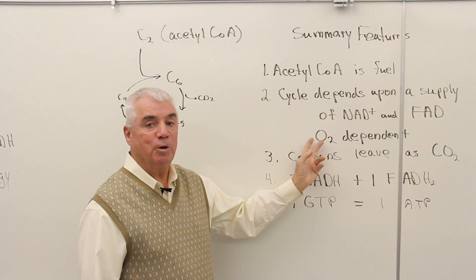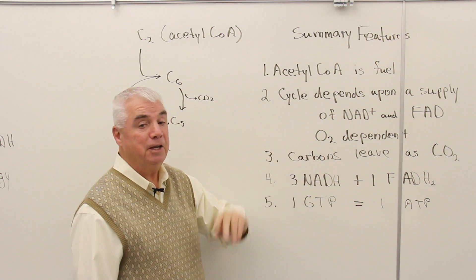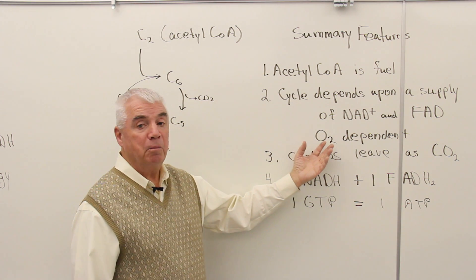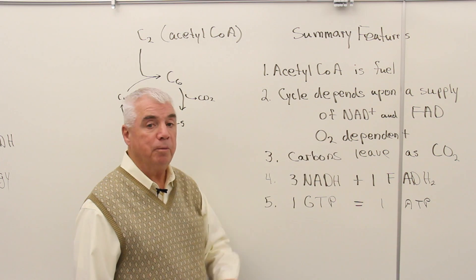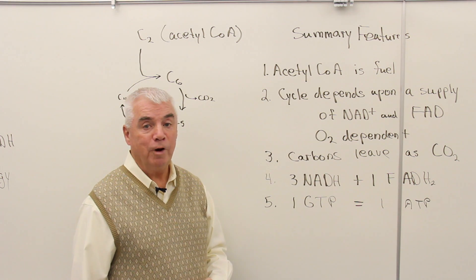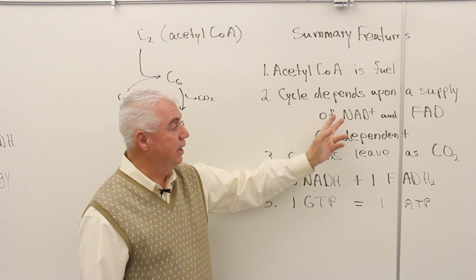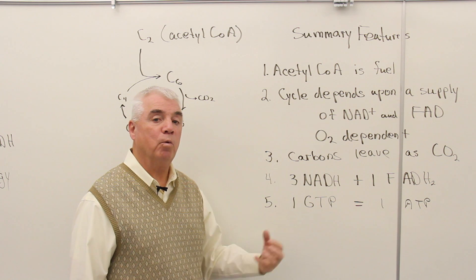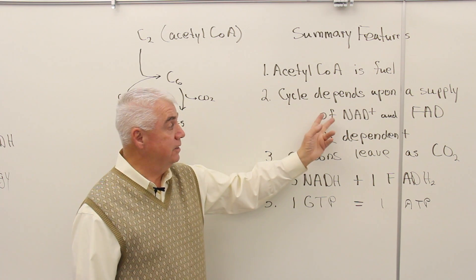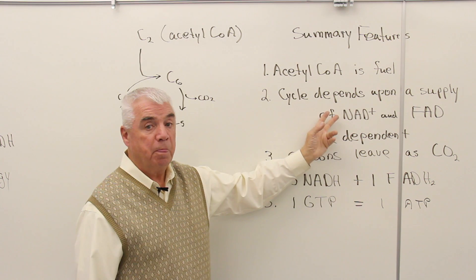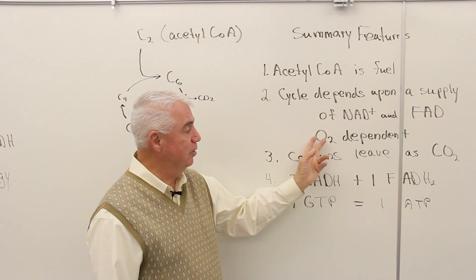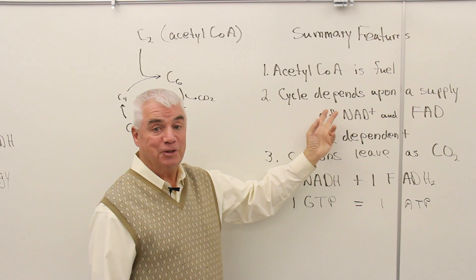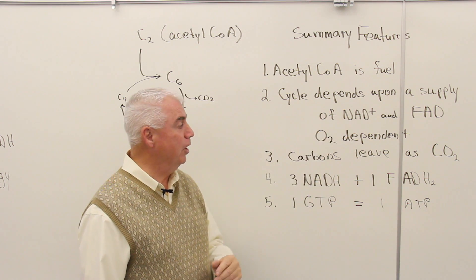The electron transport chain is oxygen dependent. If we're not breathing and taking oxygen into the bloodstream distributed to the cells, the electron transport chain can't work, and supplies of NAD+ and FAD can't work their way back to the citric acid cycle. So if you stop breathing, there's no oxygen, the electron transport chain stops, the citric acid cycle stops too, and the lights go out.